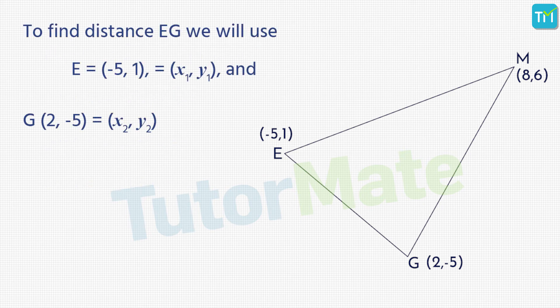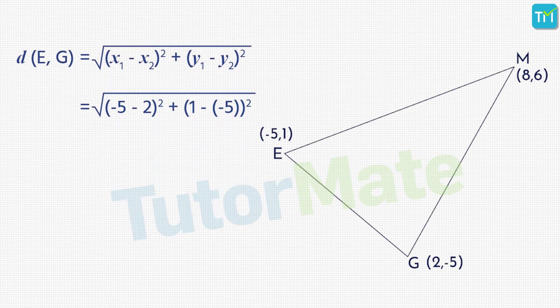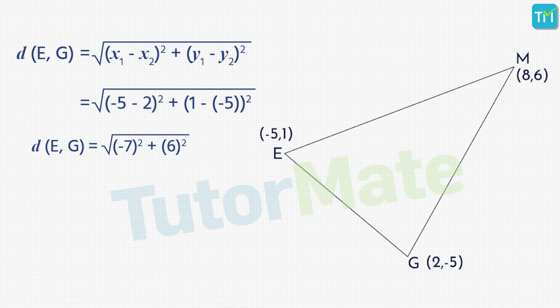Now to find the distance EG, we will denote E as (x₁, y₁). So we get x₁ = -5 and y₁ = 1. We will then denote G as (x₂, y₂), so we get x₂ = 2 and y₂ = -5. Substituting these values in the distance formula, we get distance EG is equal to √[(-5 - 2)² + (1 - (-5))²]. On simplifying, we will get √[(-7)² + 6²]. We know that (-7)² is nothing but 7², that is 49, while 6² is also equal to 36. So we get the distance EG is equal to √(49 + 36), that is √85 units.